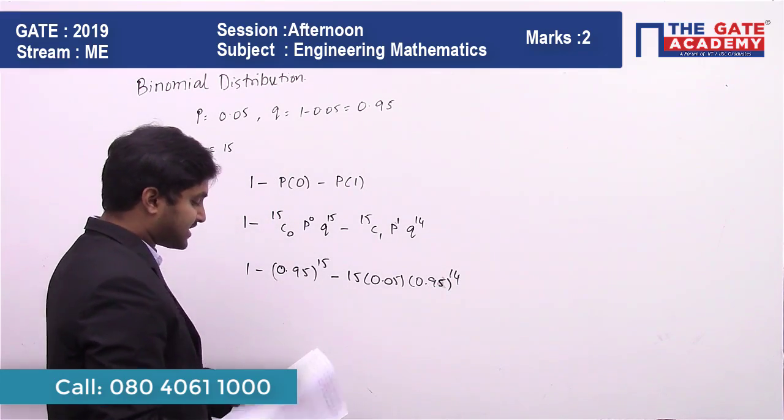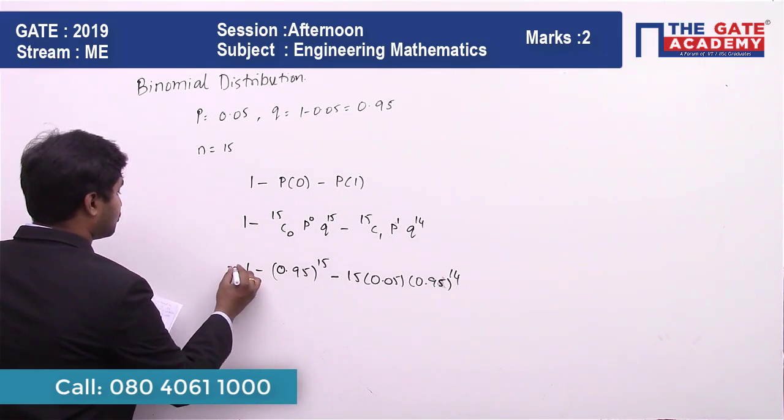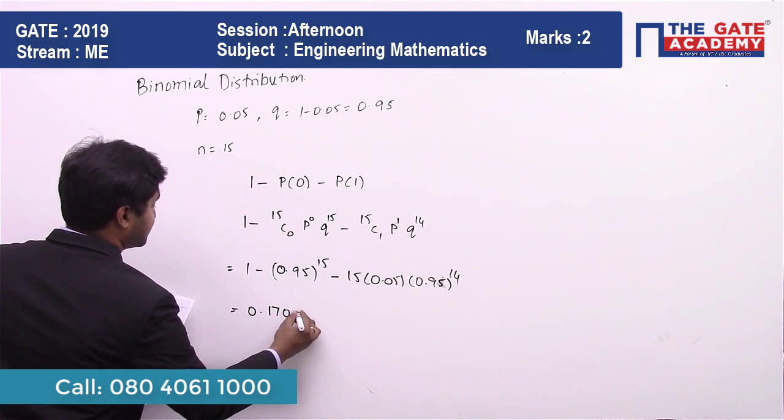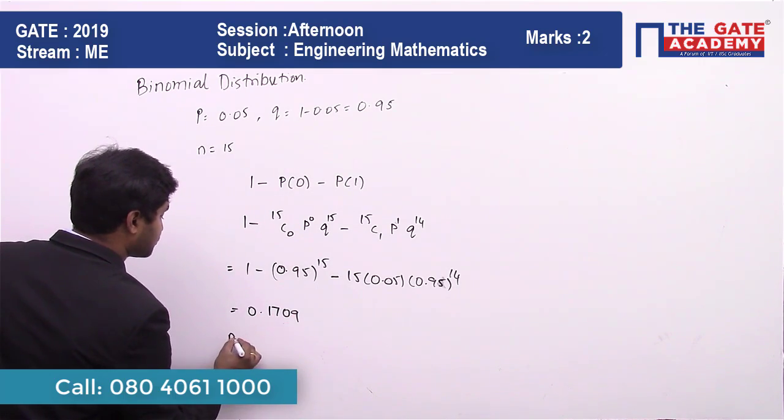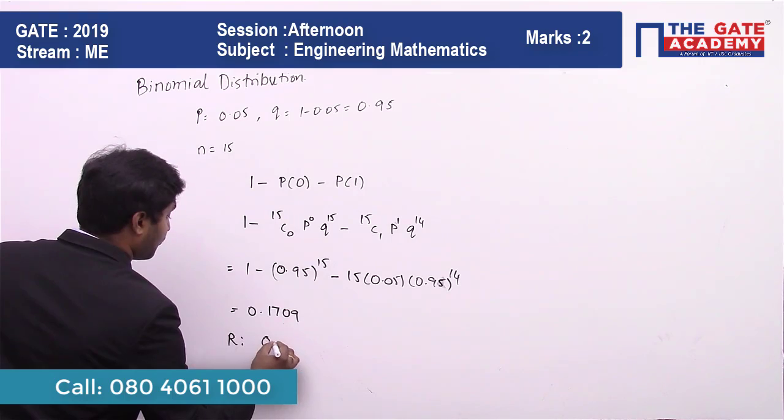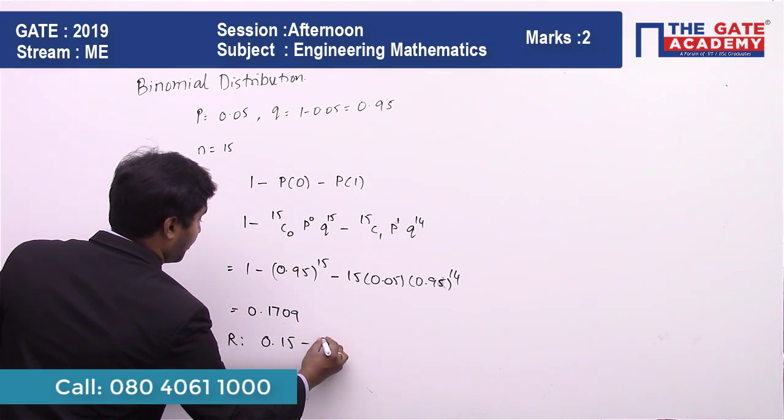Please calculate the value. It will come to 0.1709. So the range for this question can be 0.15 to 0.19.